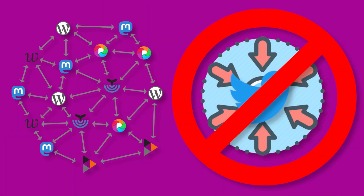Imagine that you could connect with your friends, family, or colleagues on any social media network, without having to create an account on every single one. ActivityPub enables this interoperability by providing a set of guidelines and protocols for social media networks to follow. It fosters an inclusive and connected digital environment, while also preventing everyone from congregating to the same platform. You can also host your own platform and connect it to all the others.